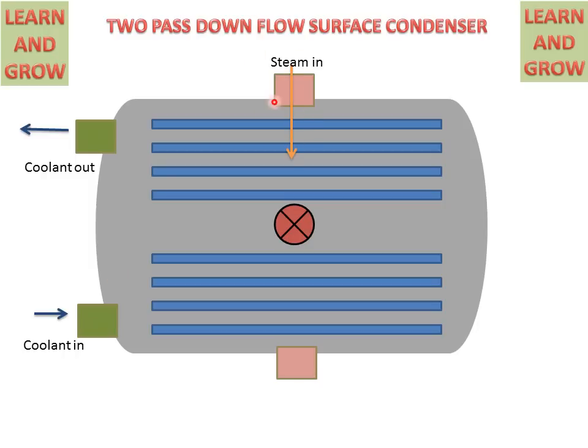Steam will enter from the top side of the condenser and condensate in liquid form will out from the down side. This is the water box where water will circulate from this side to upper section.